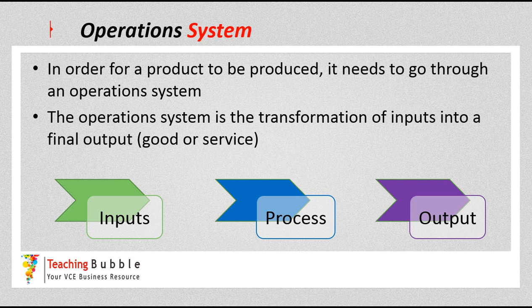Hi everyone, it's John Mitchell and welcome to the next video, which is looking at the operation system. Operations is about producing goods and services, and in order for a product to be produced, it needs to go through what we call the operation system. The operation system is simply the transformation of inputs into a final output, and the final output is either a good or a service.